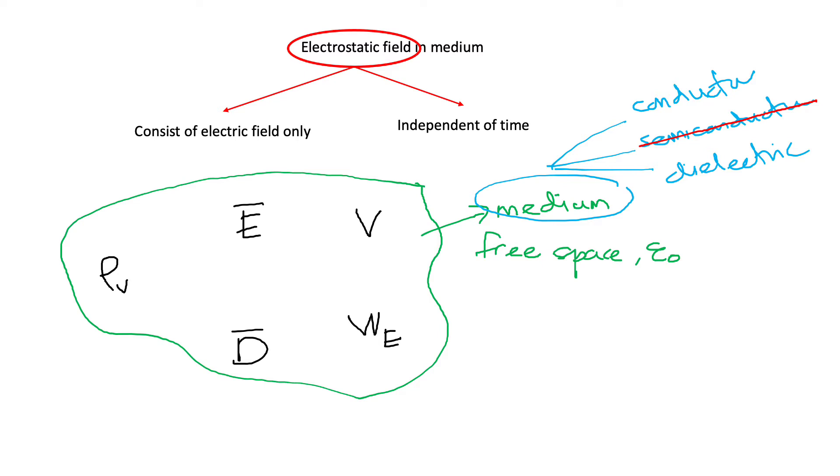So now how can we categorize a medium? To categorize a medium, the main principle is you need to have three things. The first one is the material itself, so one is the medium. The second one is the applied field.